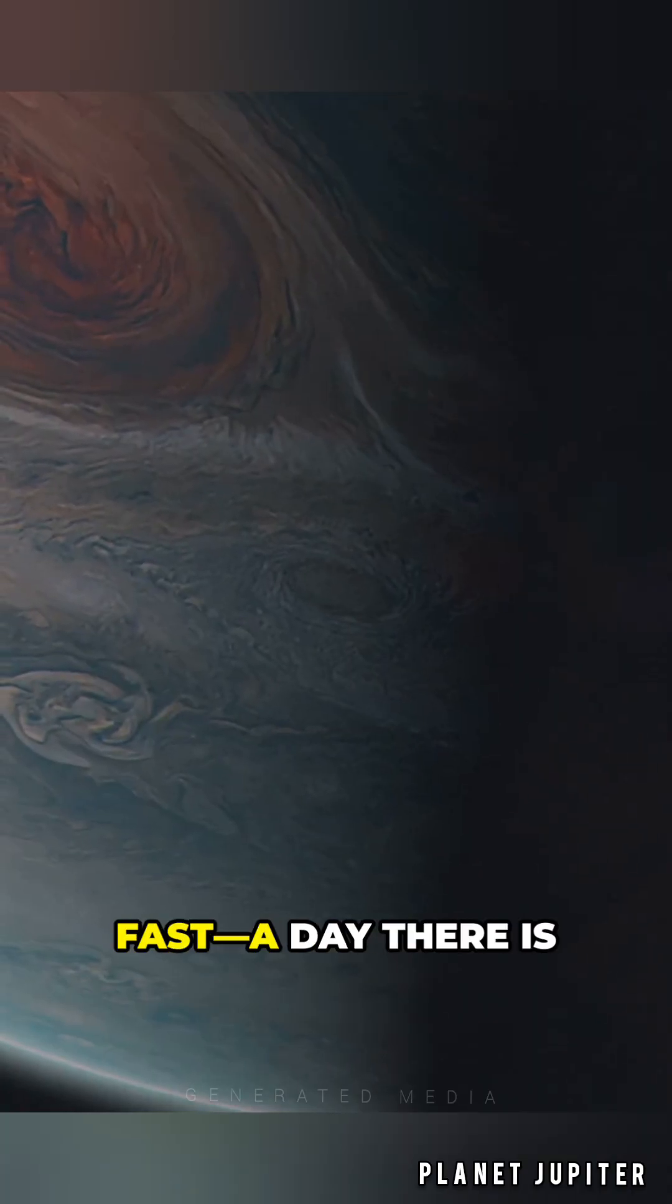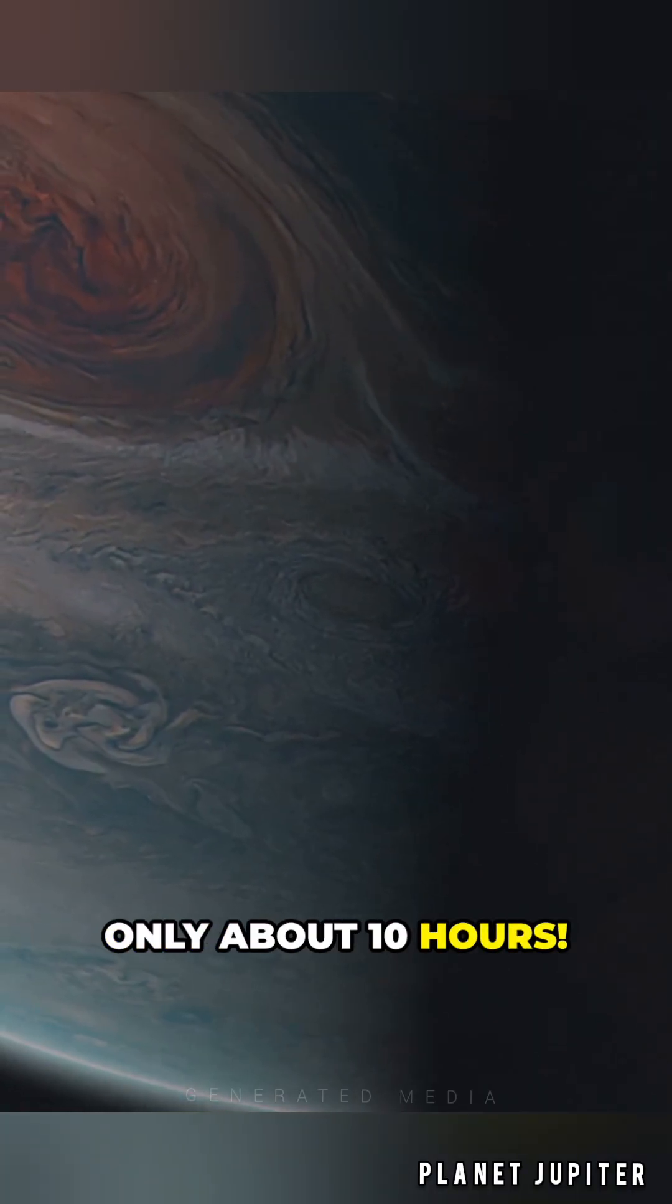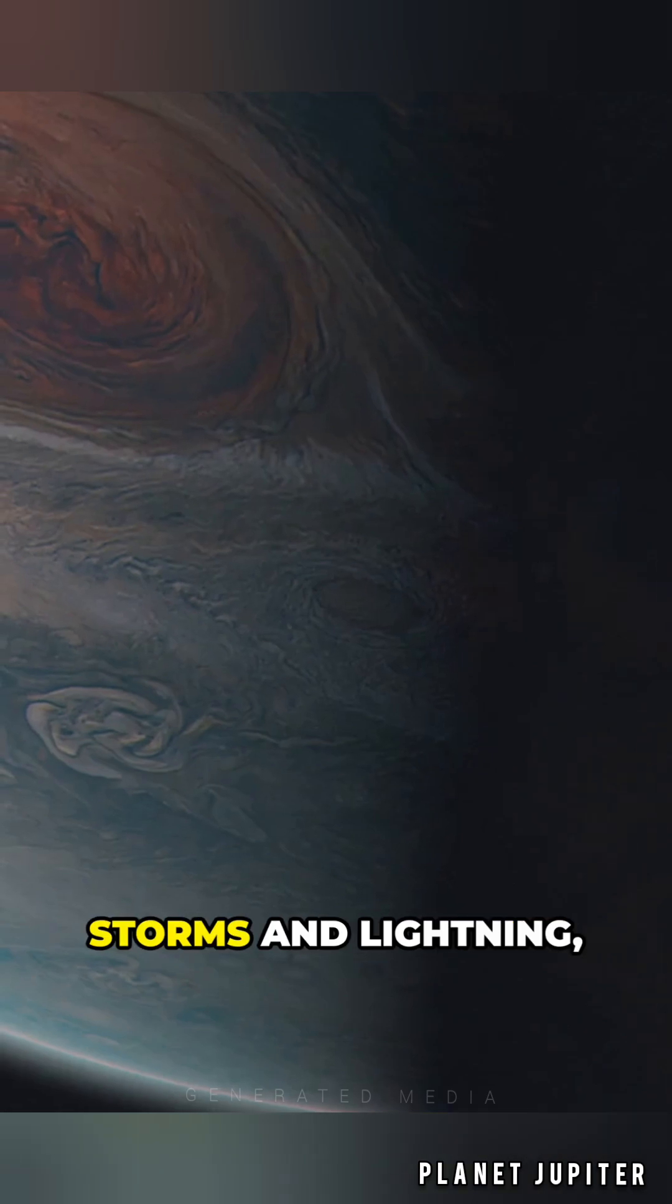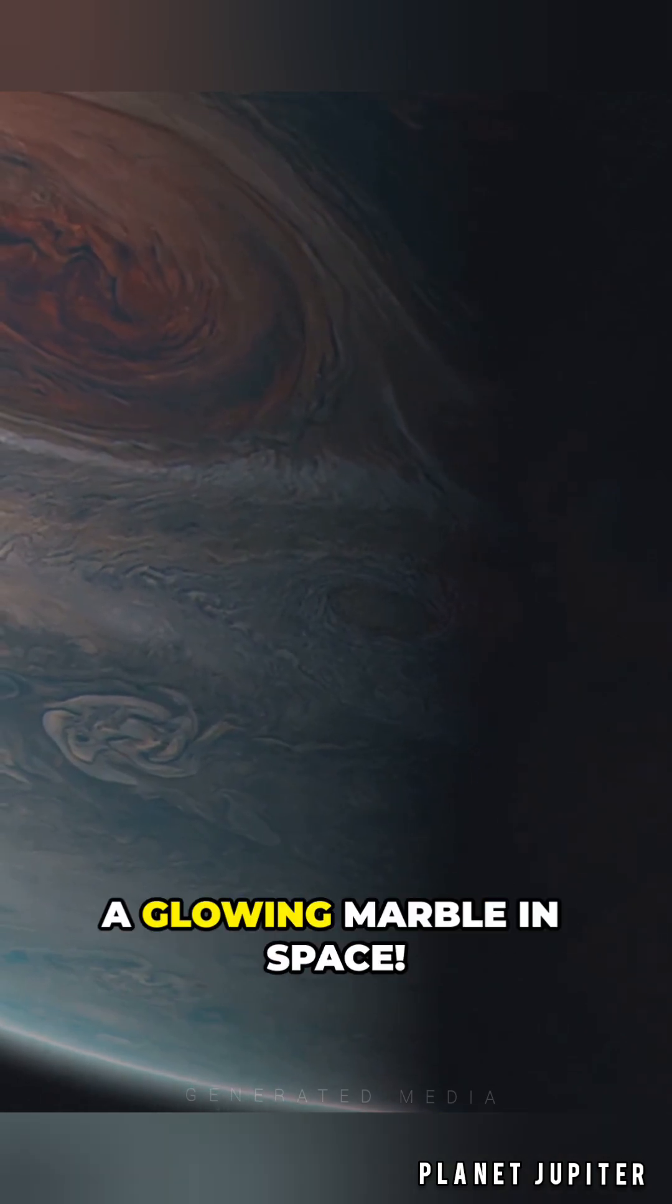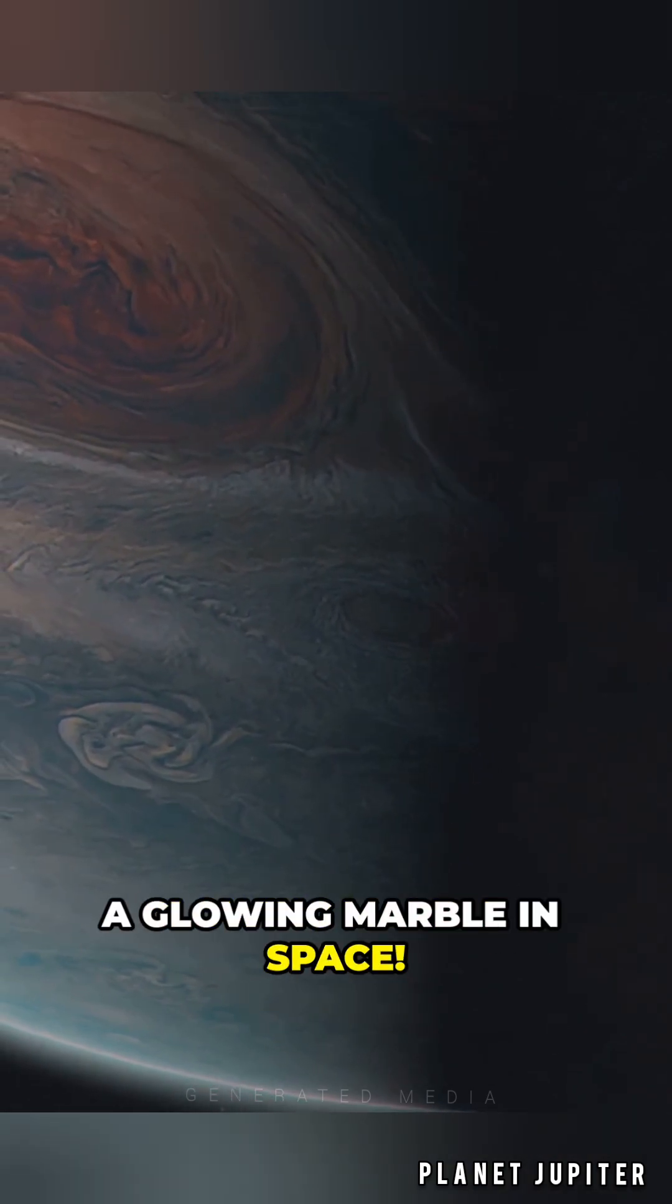Jupiter spins super fast. A day there is only about 10 hours. It's full of wild storms and lightning, making it look like a glowing marble in space.